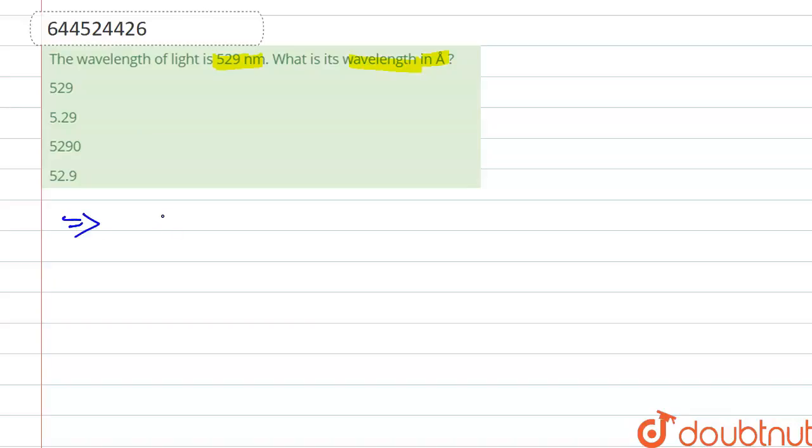So we know the relation between angstrom and nanometer is 1 angstrom is equal to 0.1 nanometer. And here it is given in question, the wavelength is 529 nanometer, where lambda is wavelength. So 0.1 nanometer is equal to 1 angstrom, so 1 nanometer is equal to 1 upon 0.1, that is 10 angstrom.